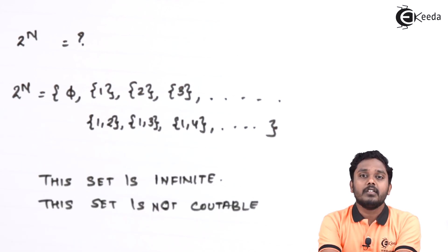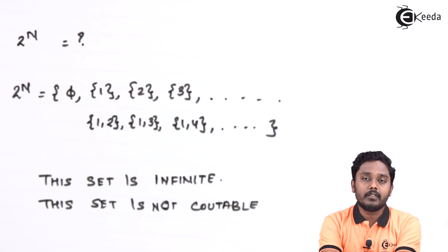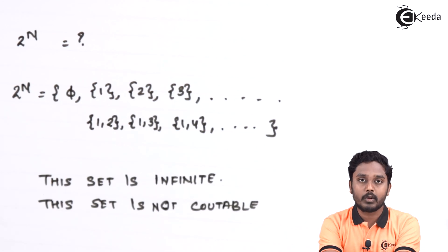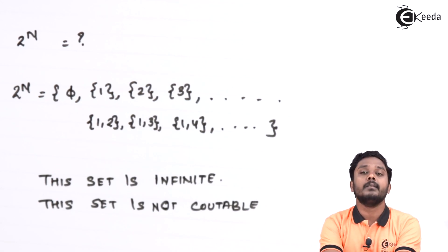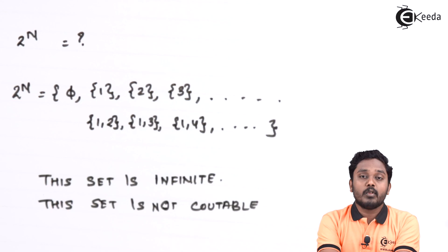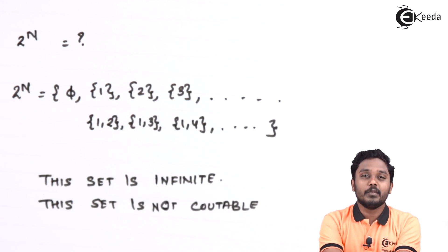To summarize, we discussed finite sets and infinite sets. Under infinite sets, a given set may be countable or uncountable. If it has a one-to-one correspondence with the natural numbers, it is countable; otherwise it is uncountable. We will use these concepts in terms of languages and Turing machines to prove certain properties of recursive and recursively enumerable languages.